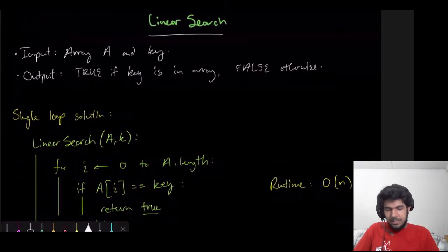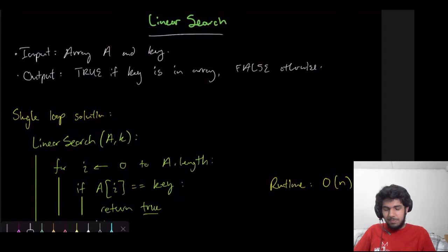So the first thing we're going to explore is linear search. The input to our algorithm is an array A and the key, which is what we're looking for. And our output is true if this key is found within the array, and it's false if it's not.